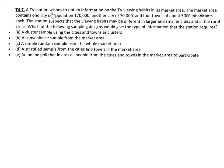Number seven, a TV station wishes to obtain information on the TV viewing habits in its market area. The market area contains one city of population 170,000, another city of 70,000, and four towns of about 5,000 inhabitants each. The station suspects that the viewing habits may be different in larger and smaller cities and in rural areas. Which of the following sampling designs would give the type of information that the station requires?